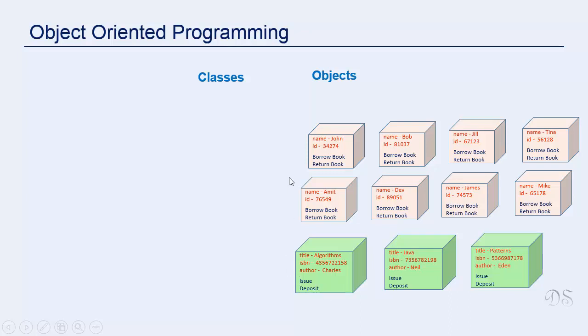We generally need to model real-world things that have similar behavior but differ in their internal state, which means that their data is different. For example, all the user objects can borrow a book or return a book but all have their own data. Similarly, all these book objects have similar behavior but different data.